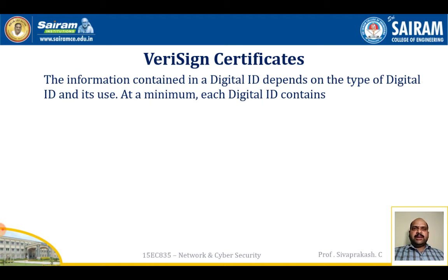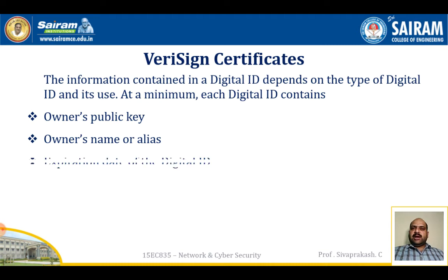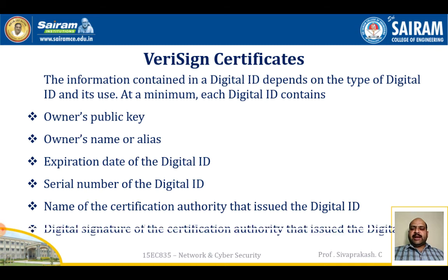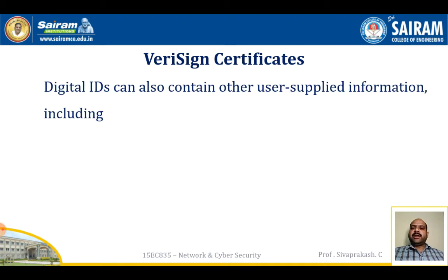VeriSign issues X.509 certificates with the product name VeriSign Digital ID. As of early 1998, over 35,000 commercial websites were using VeriSign server digital IDs, and over a million consumer digital IDs had been issued to users of Netscape and Microsoft browsers. At a minimum, each digital ID contains the owner's public key, the owner's name or alias, expiration date of the digital ID, a serial number, the name of the certificate authority that issued it, and the digital signature of the certificate authority.